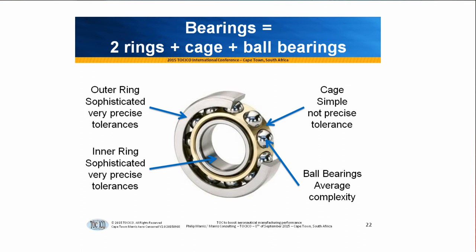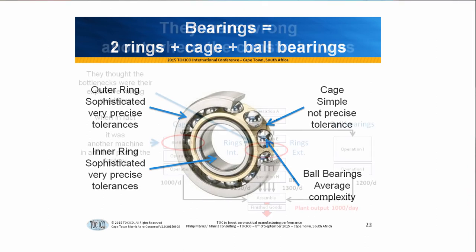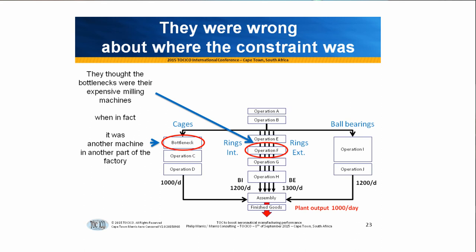One of the fascinations with theory of constraints is where the constraint should be in a company — and even looking at that diagram, you should start thinking about where you'd put the bottleneck. They wanted to do theory of constraints, they tried, and said it doesn't work — come and have a look. They got the bottleneck wrong again. They thought their expensive milling machines were the bottleneck, so they applied all of theory of constraints to the milling machines. In fact, it was a little old machine in the corner of the factory that made the cages — the easy, simple stuff nobody thought about because it didn't cost much.